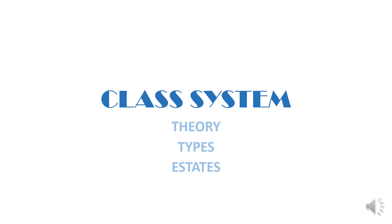Class system is still a kind of open system. Compared to caste, class is a better way in a sense. Basically, which class you belong to is judged and evaluated on the basis of income first — your basic earning and income — and secondly by the wealth you possess. These are the two deciding categories to determine which class you belong to in society.